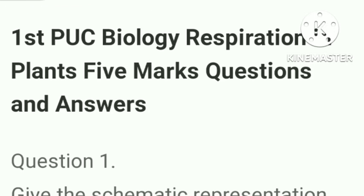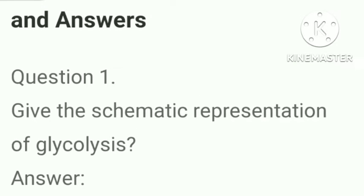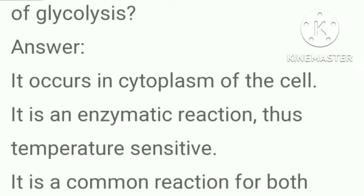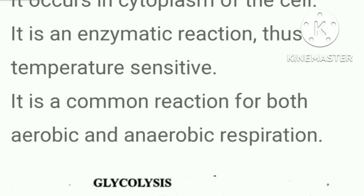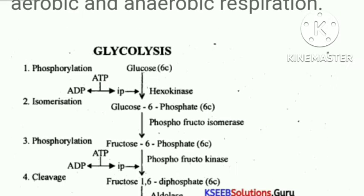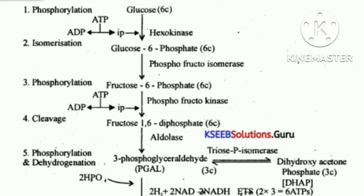Next, five mark questions and answers. Give the schematic representation of glycolysis. Answer: glycolysis occurs in the cytoplasm of the cell. It is an enzymatic reaction, thus temperature sensitive. It is a common reaction for both aerobic and anaerobic respiration.